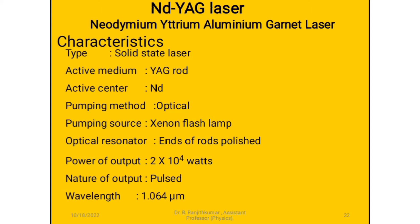Optical resonator: the ends of the rod are polished with silver. Power of output: 2 × 10⁴ Watts. Nature of output: pulsed. Wavelength: 1.064 micrometers.